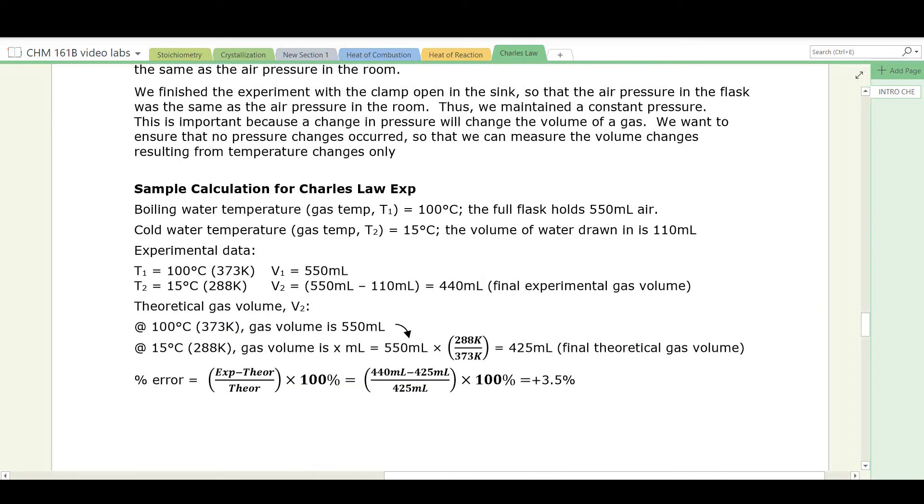So here's the calculation that will be required for this experiment. The boiling water temperature, that would be the gas temperature initially, was 100 degrees C. And the full flask holds, for example, 550 mils of air. Then the cold water temperature in the sink, that would be the cold gas temperature, T2, was 15 degrees C. And we measured a volume of water that was drawn into the flask. Here's our experimental data. T1 is 100 degrees C or 373 Kelvin. V1 is 550 mils. T2 is 15 degrees C or 288 Kelvin. It's cooling off. The volume will decrease. This was V2. V2 will be the initial volume of 550 minus the amount of water that went into the flask. And we'll measure that and I'll show you in the experiment. That difference is 440 mils.